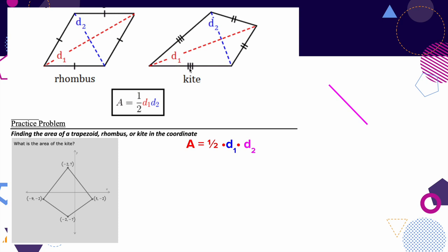But you calculate the area exactly the same: one-half diagonal one times diagonal two. It doesn't change whether it's a rhombus or a kite. We need to find what the diagonals are on this coordinate grid. We're simply going to find the distance across and the distance straight down.